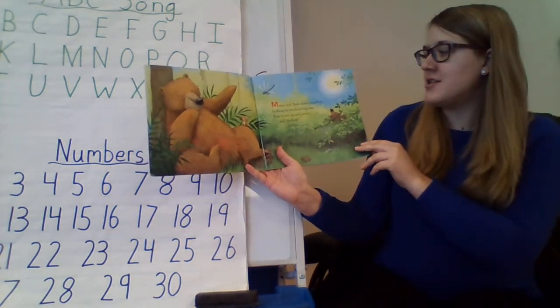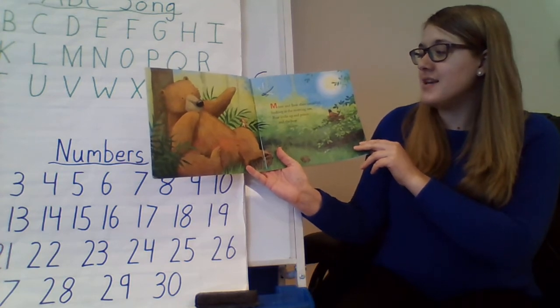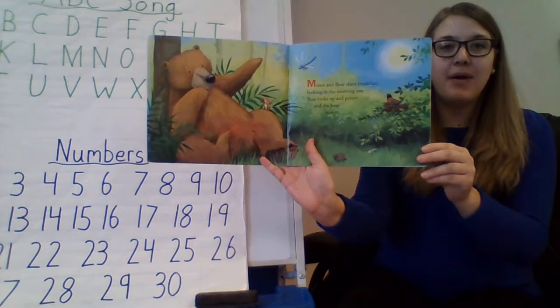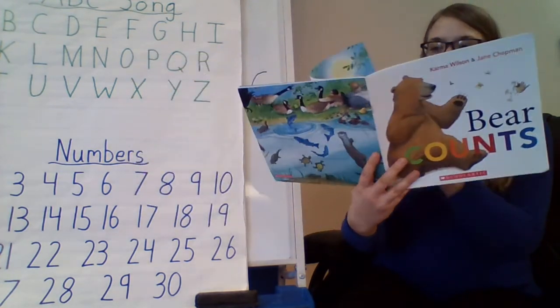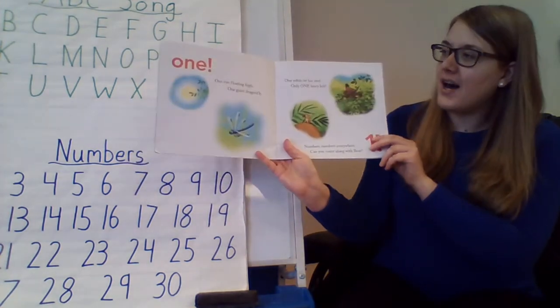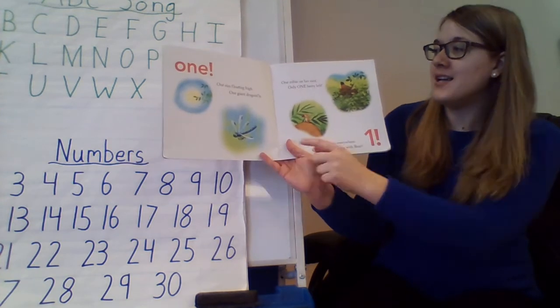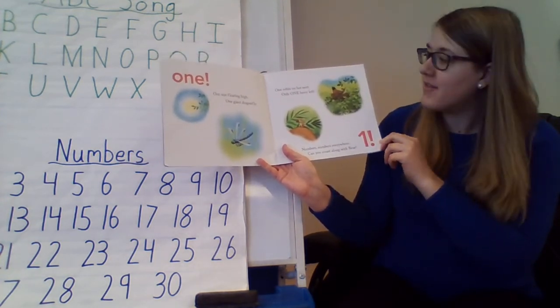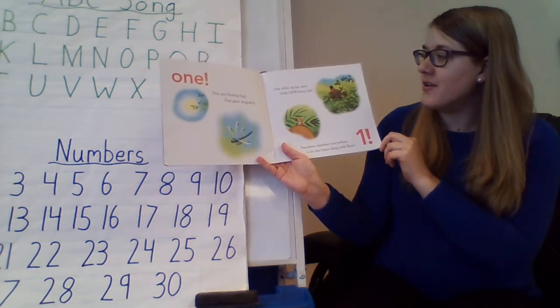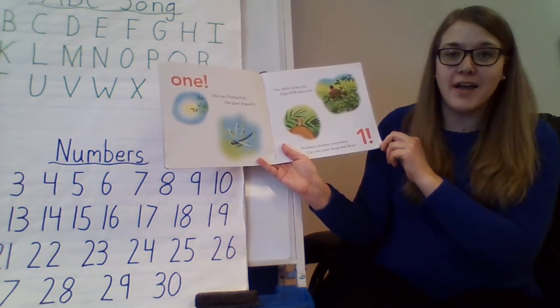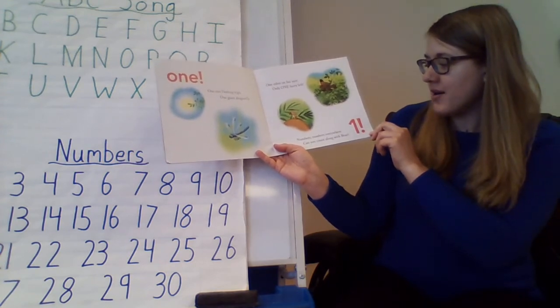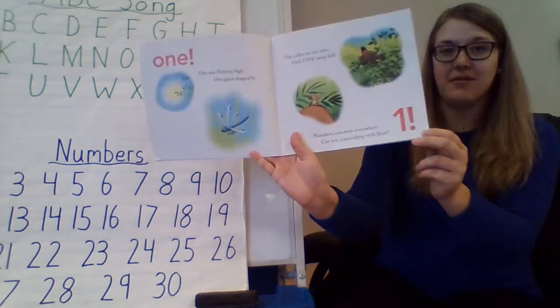Mouse and Bear share breakfast, basking in the morning sun. Bear looks up and points, and the bear counts one. One sun floating high, one giant dragonfly, one robin on her nest, only one berry left. Numbers, numbers everywhere. Can you count along with Bear?